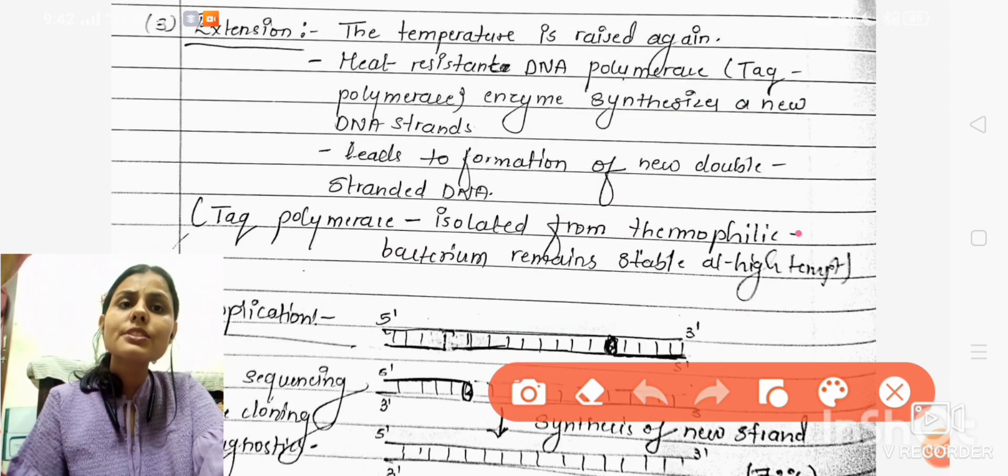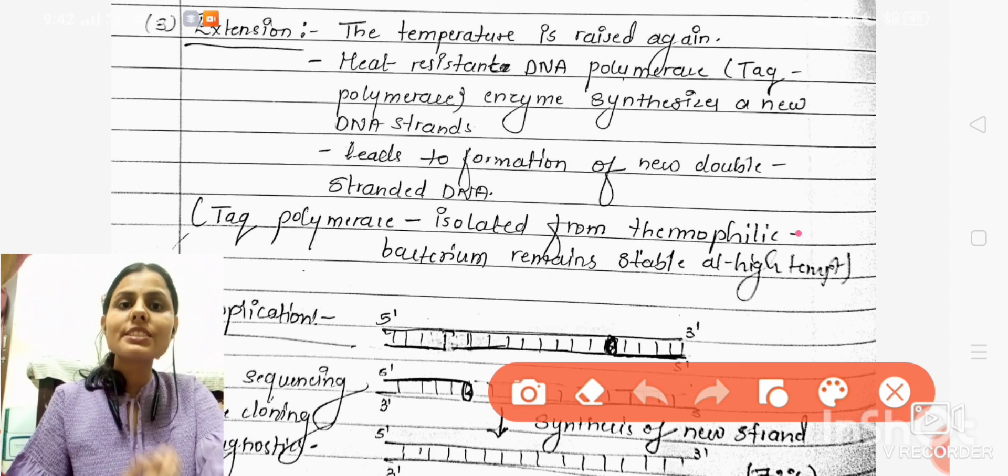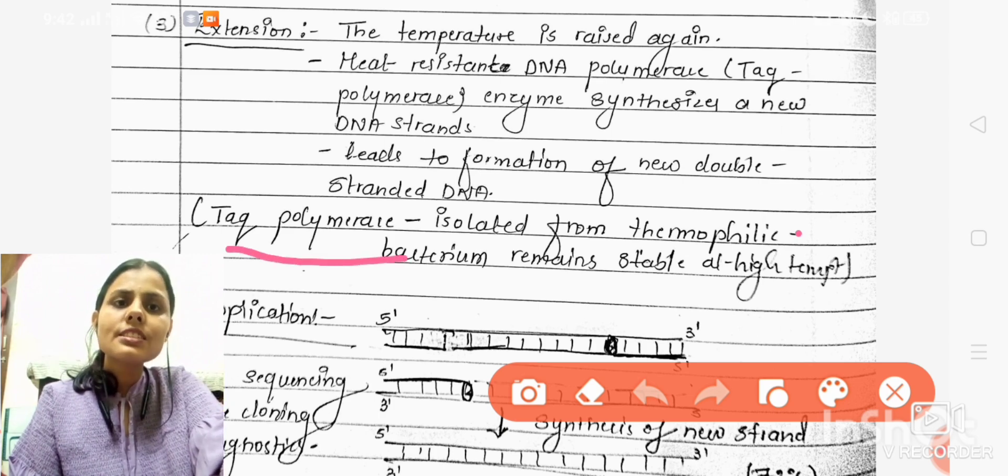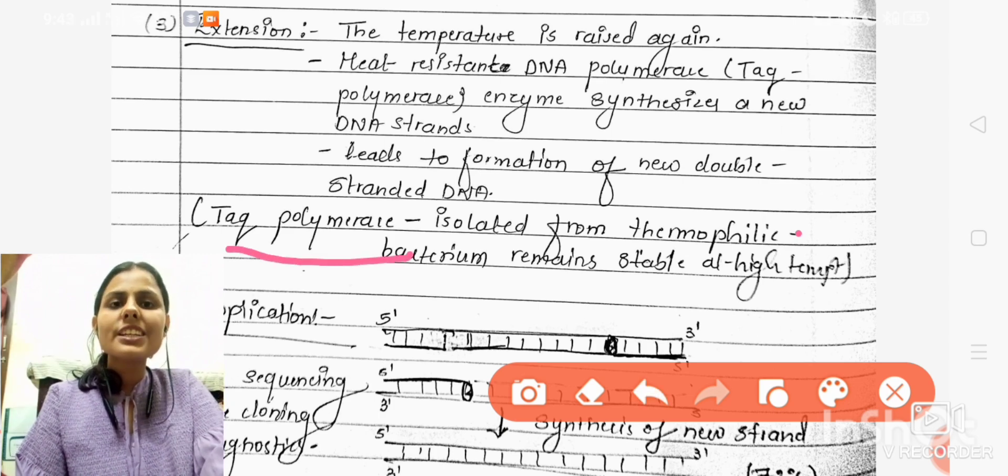The last step is extension. Here the temperature is raised again and we use a special type of DNA polymerase called Taq polymerase. Taq stands for Thermus aquaticus and Taq polymerase is thermostable, meaning it remains stable at high temperatures.